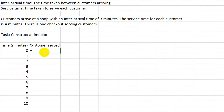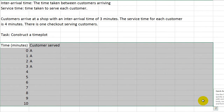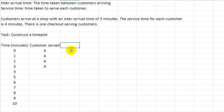Guess how many minutes it takes to serve customer A? Four. So I'm going to put A four times in the customer served column. Customer A is served for 4 minutes. Customers arrive at the shop with an inter-arrival time of 3 minutes, so the next column is going to be arrivals.